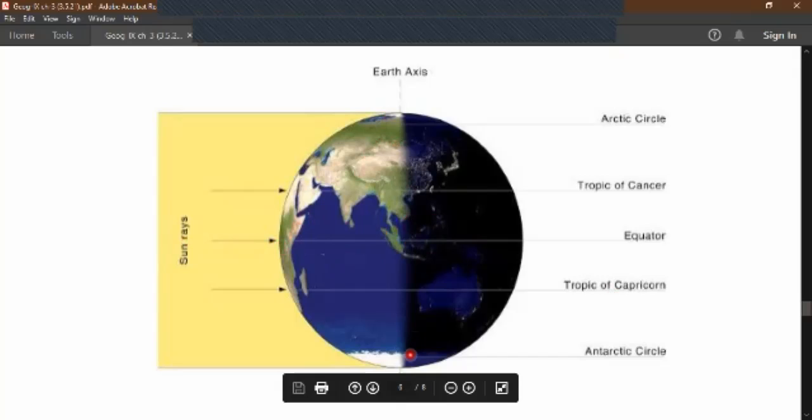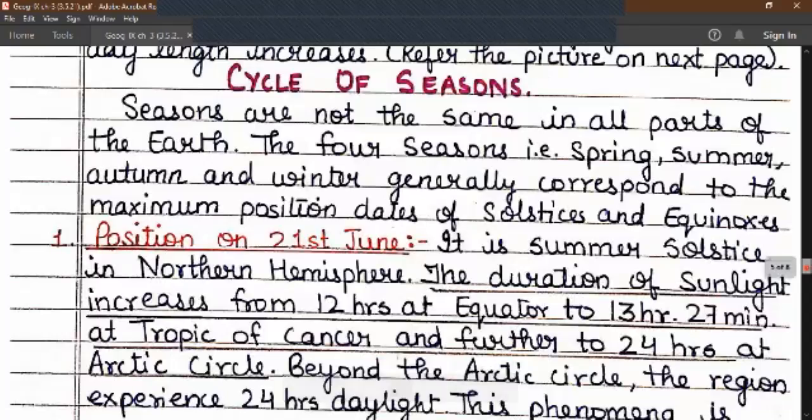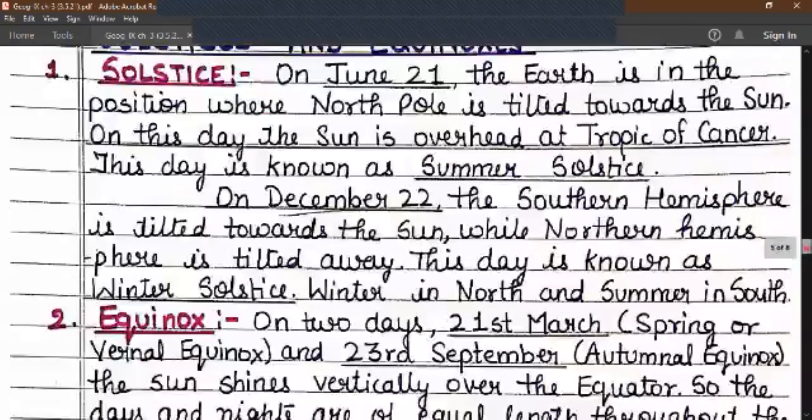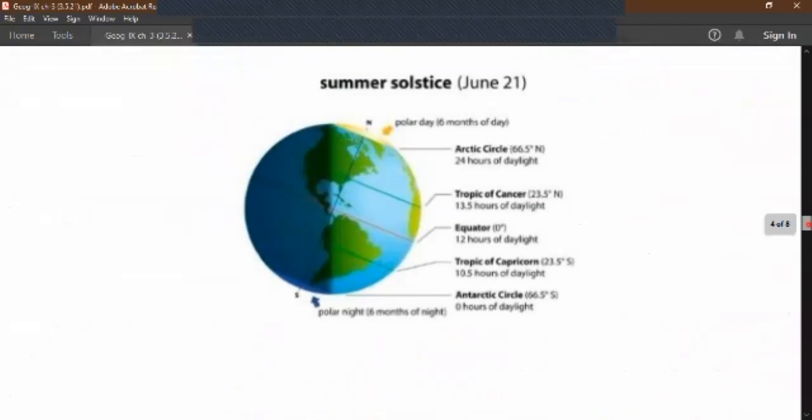When the apparent northward movement of the sun continues up to June 21st, there are variation in the duration of daylight as the day length increases. Now let us discuss about the cycle of seasons. Seasons are not the same. The revolution of the earth around the sun and the tilted axis of the earth causes variation in seasons.